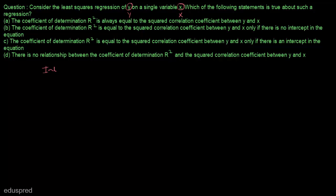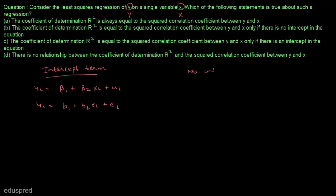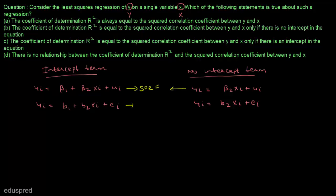Keeping these notations in mind, let's write the regression model with an intercept term. This is the stochastic population regression function and the stochastic sample regression function with intercept. And if we do not have an intercept in the model, then the stochastic population regression function and stochastic sample regression function are written without the intercept term.